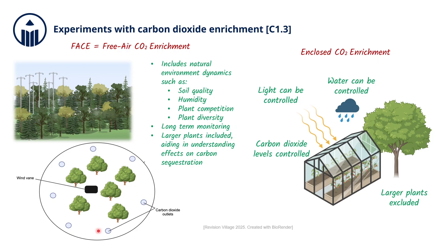Large open-air rings or arrays of pipes release CO2 at specific concentrations, typically elevated to levels expected in future climate scenarios. Sensors and valves are used to monitor and regulate the CO2 concentration around the plants. A wind vane helps to ensure that the CO2 enrichment is evenly distributed in the right direction, as wind patterns can affect how gases are dispersed in the open field. By knowing wind direction, researchers can adjust the CO2 release systems to achieve a uniform exposure for plants.